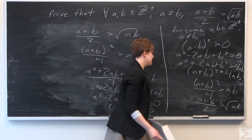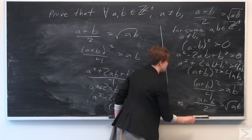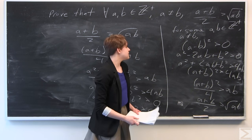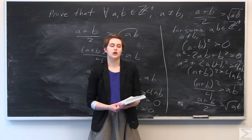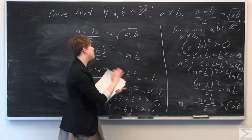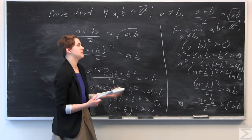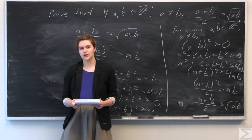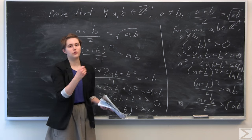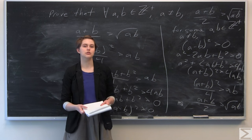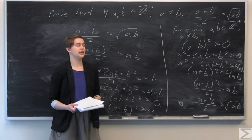QED. By using backward reasoning — constructing a proof backwards — we have found a way to prove that a plus b over 2 is greater than the square root of ab, which might not have been intuitive just looking at the problem.